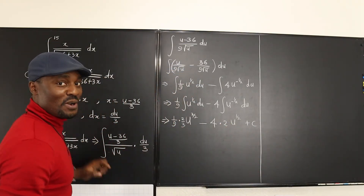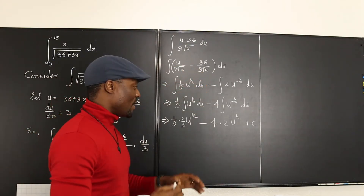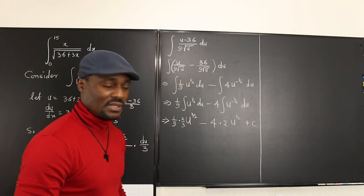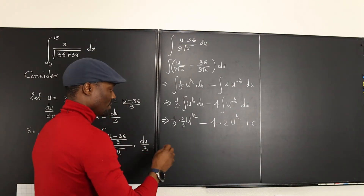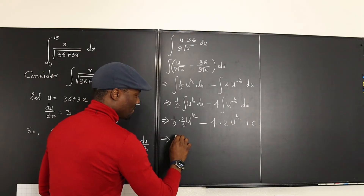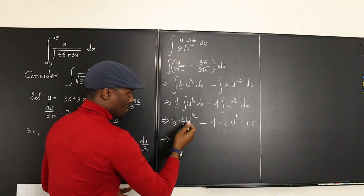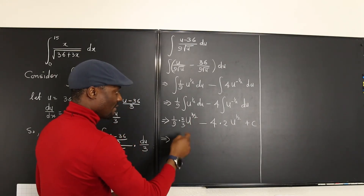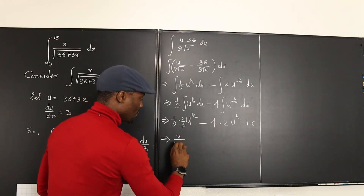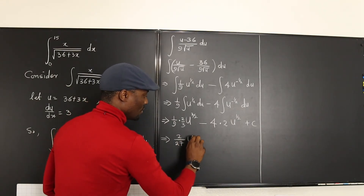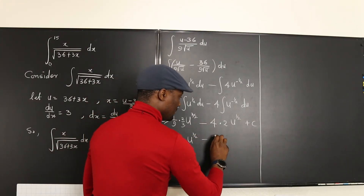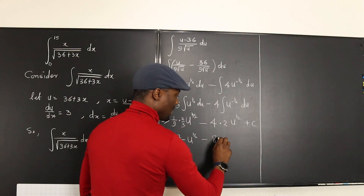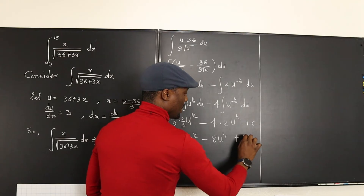We add plus C here because the boundaries are not in effect yet during integration. Cleaning this up: the first term becomes 2/27 times u to the 3/2, and the second term becomes 8 times u to the 1/2, plus C.